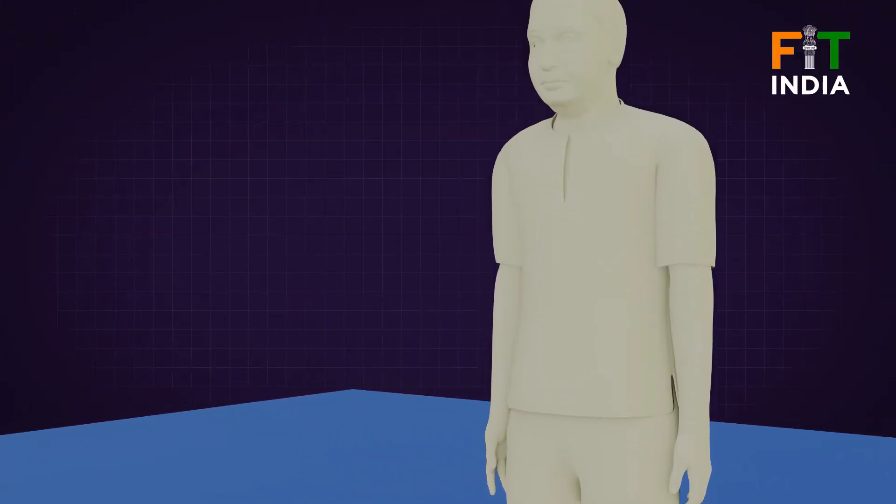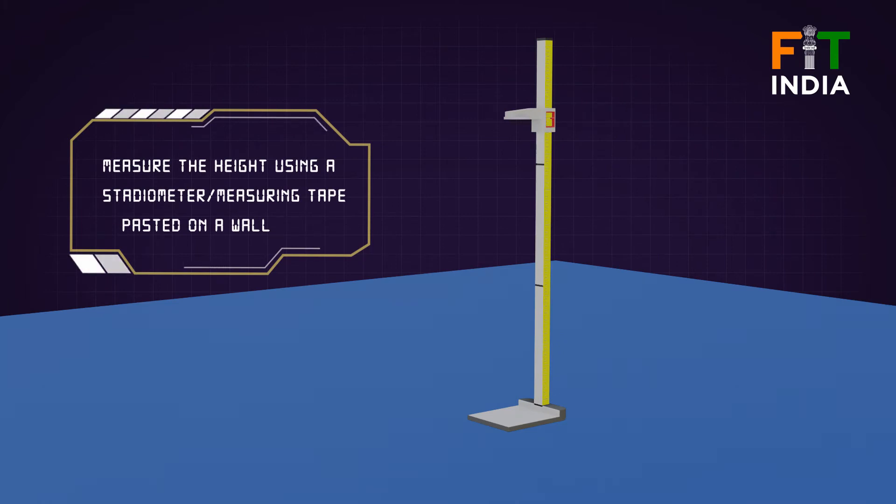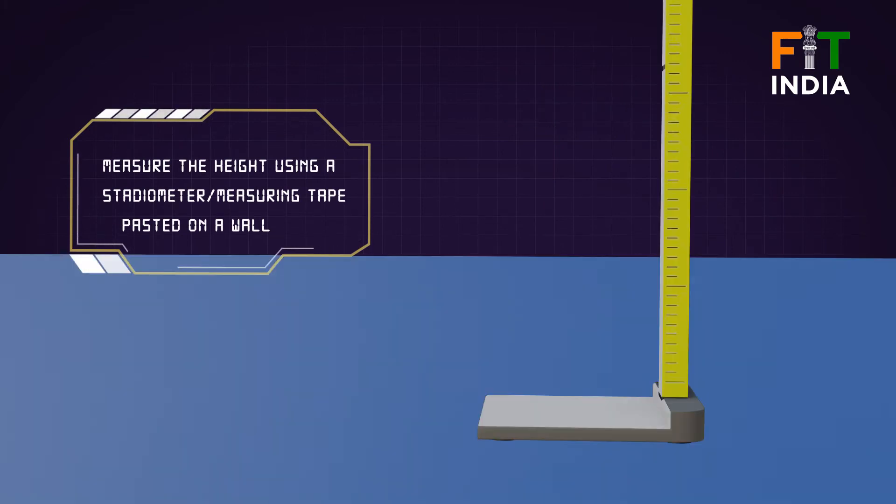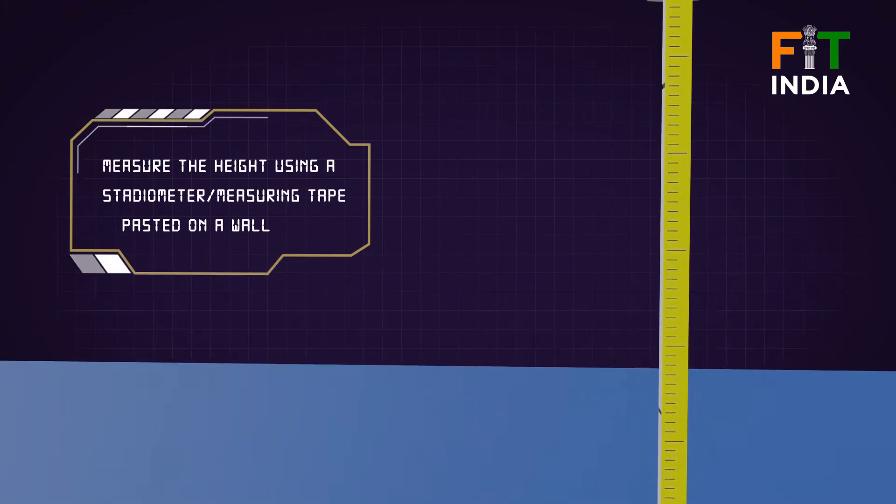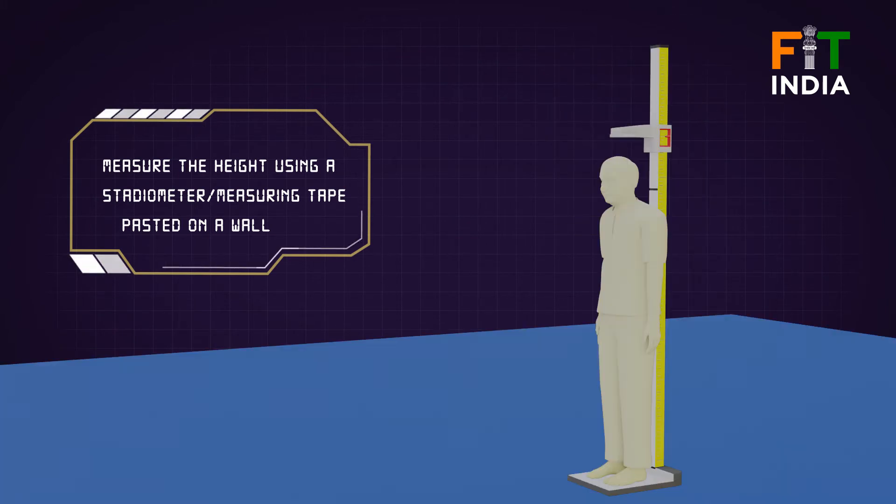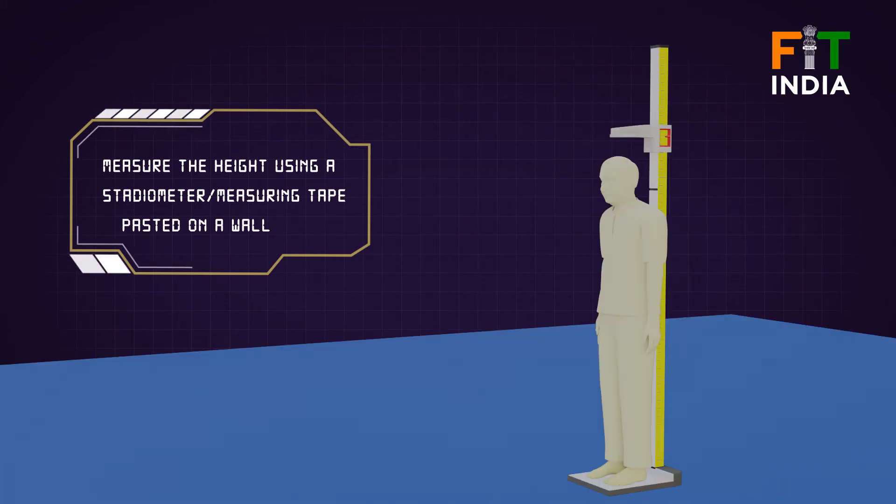To measure the height of an individual correctly, a stadiometer is required. If you do not have a stadiometer, your height can be measured by pasting a measuring tape against a wall and standing upright against the wall.